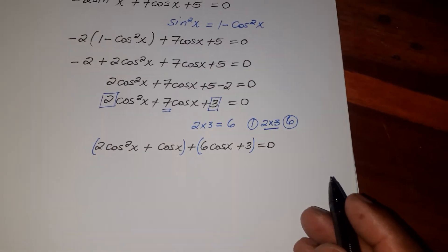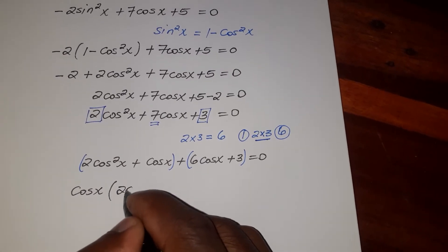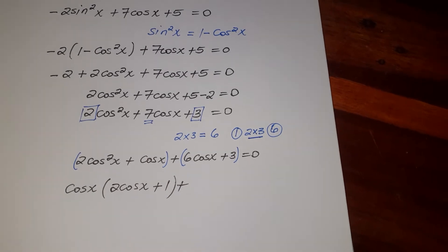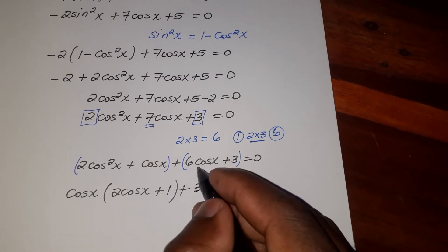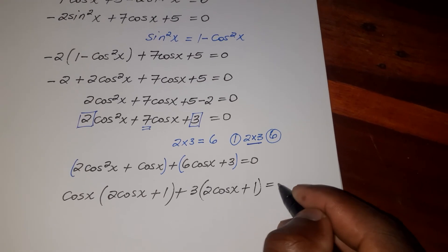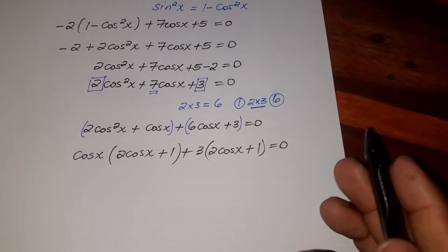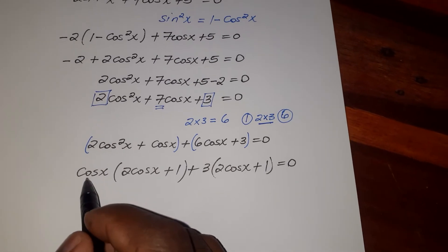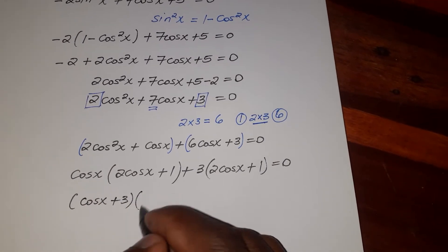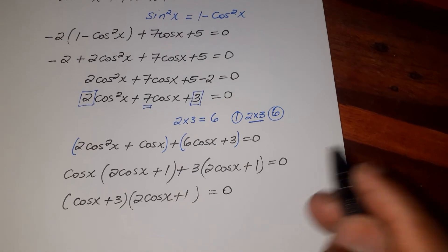We now group the four terms in pairs to identify common factors. From the first pair, the common factor is cosine X, leaving 2 cosine X plus 1. From the second pair, the common factor is 3, and dividing 6 by 3 gives 2 cosine X plus 1. Since both groups share the factor 2 cosine X plus 1, we factor to get: cosine X plus 3, times 2 cosine X plus 1, equals zero.